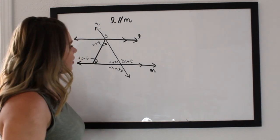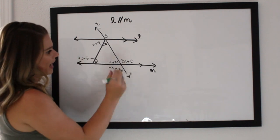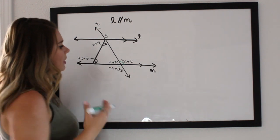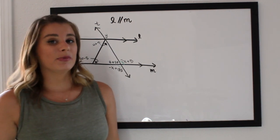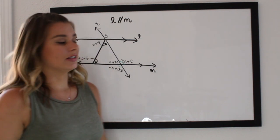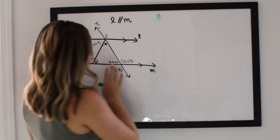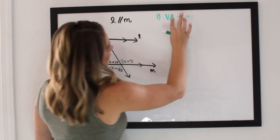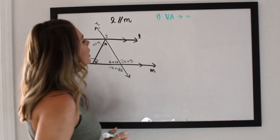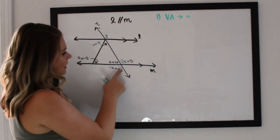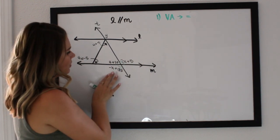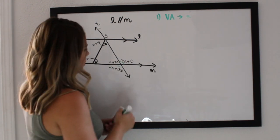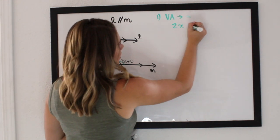The first one that kind of jumps out at me looking at this diagram is I have a pair of vertical angles. So what we need to do is state the theorem we use before we write the equation. My first equation is going to come from the theorem that vertical angles are equal. That means this angle is equal in measure to this one, so negative x plus 185 is going to equal 2x plus 5.